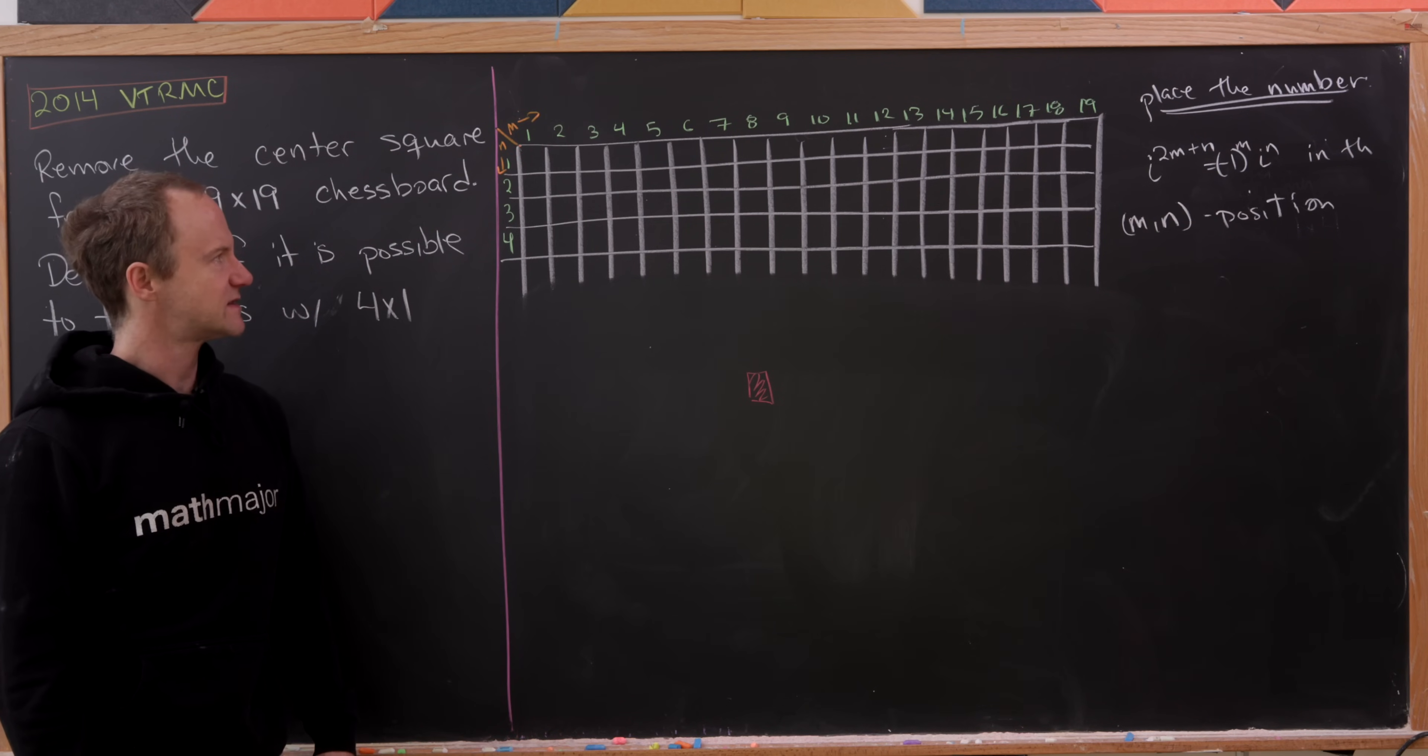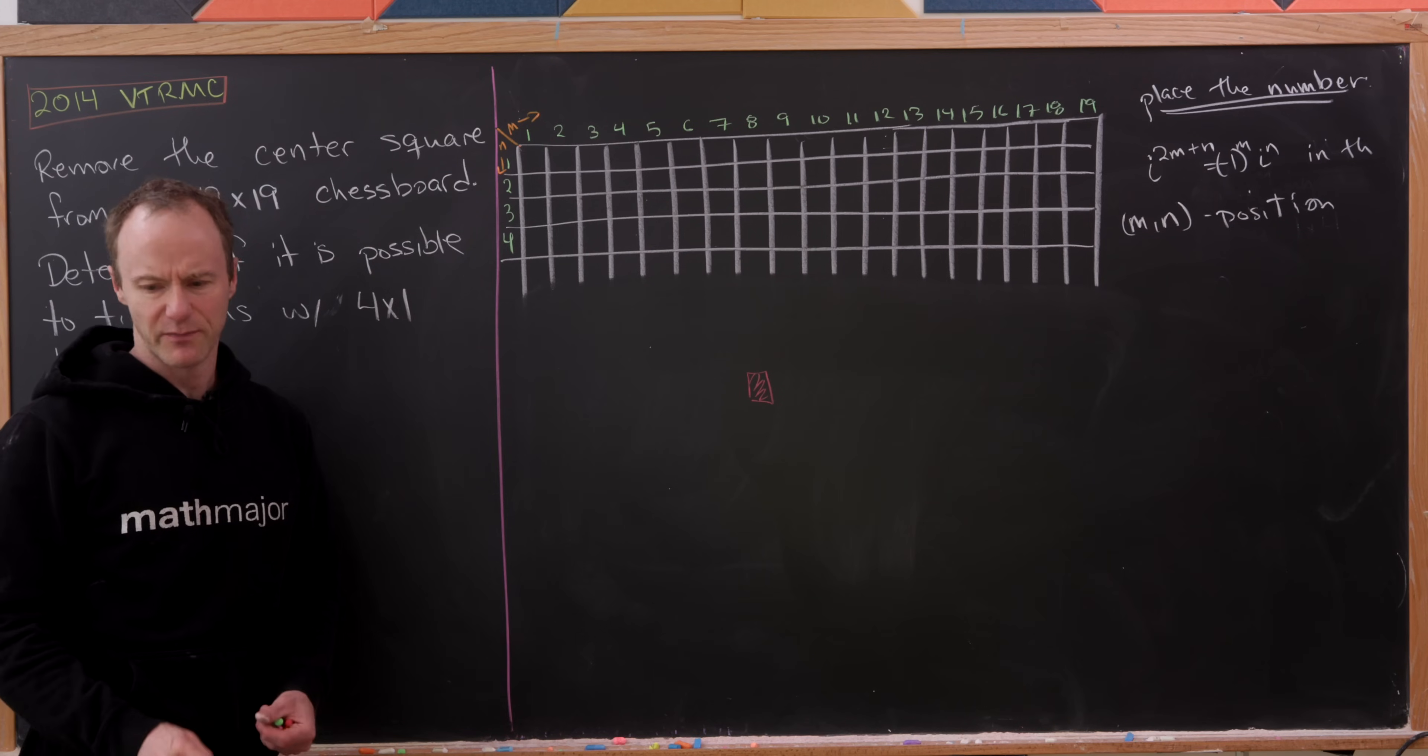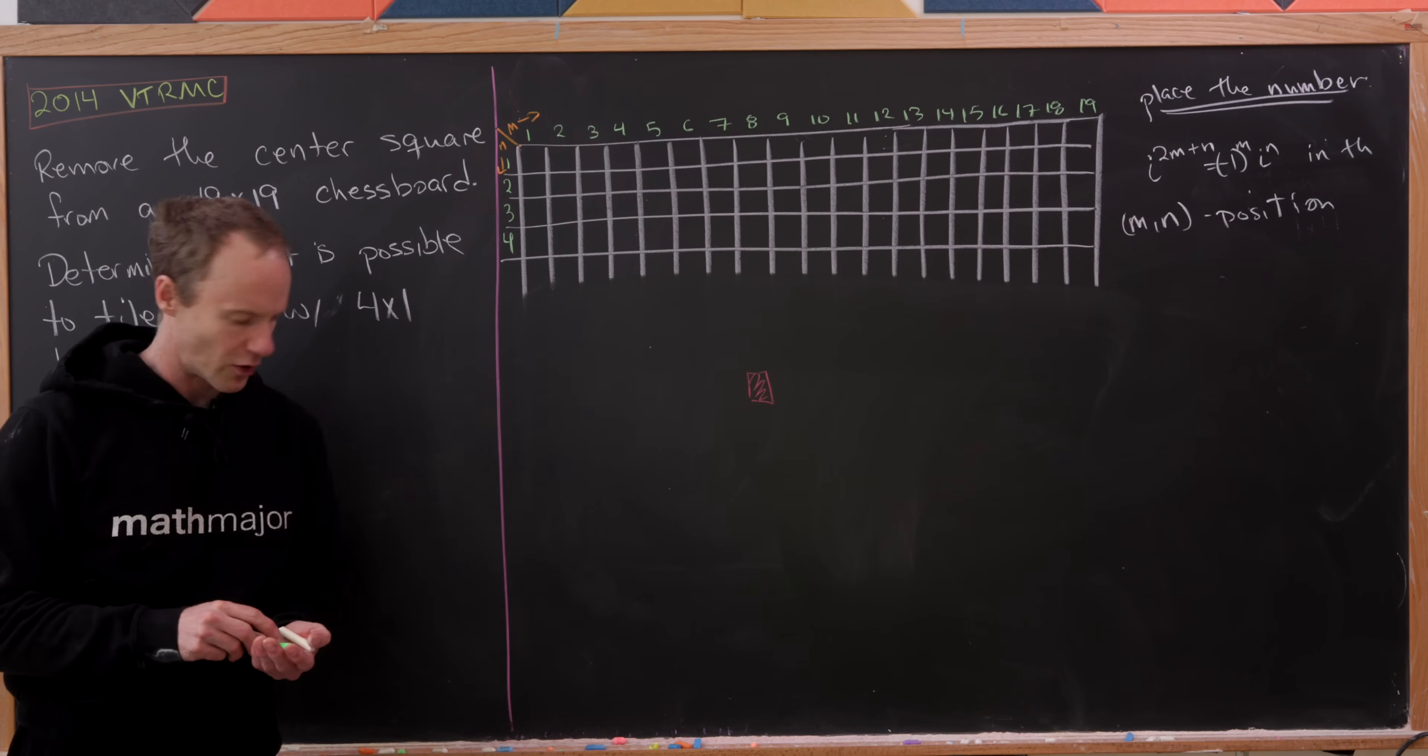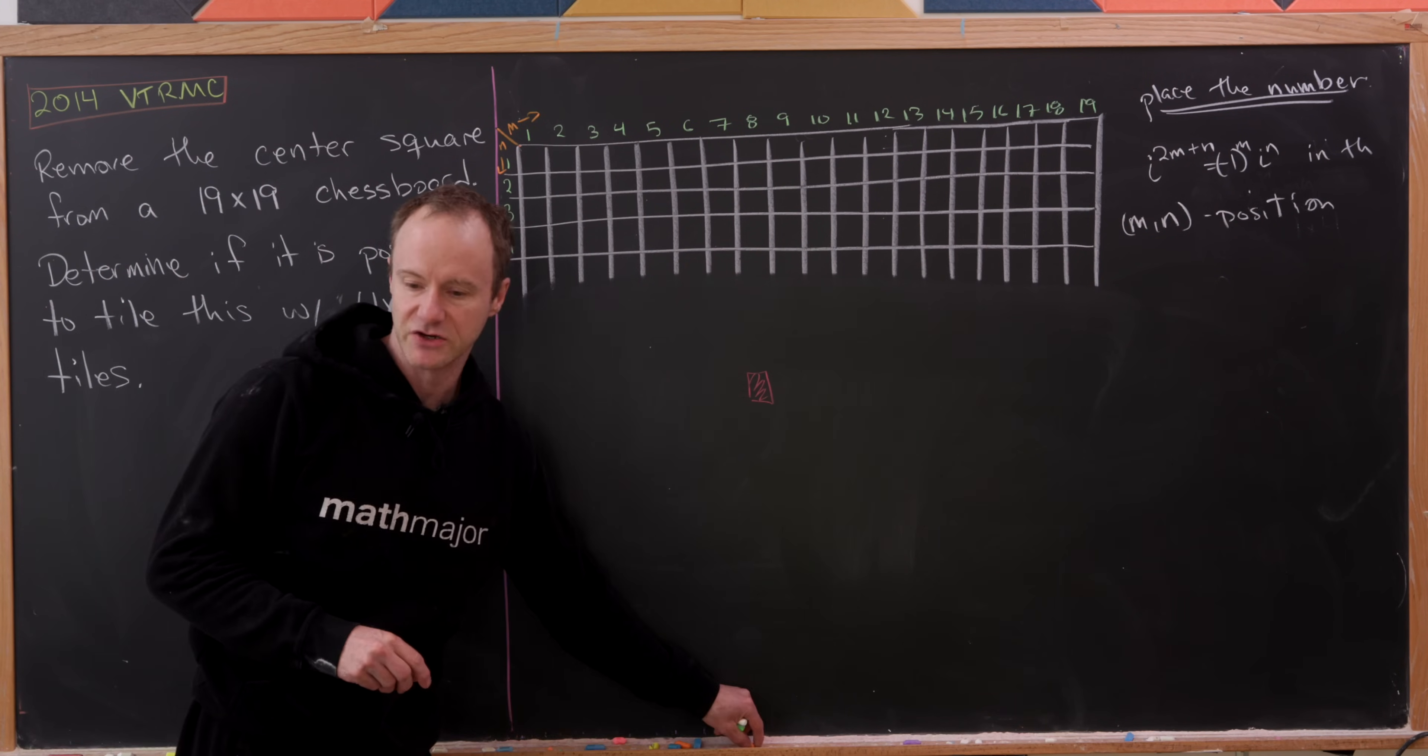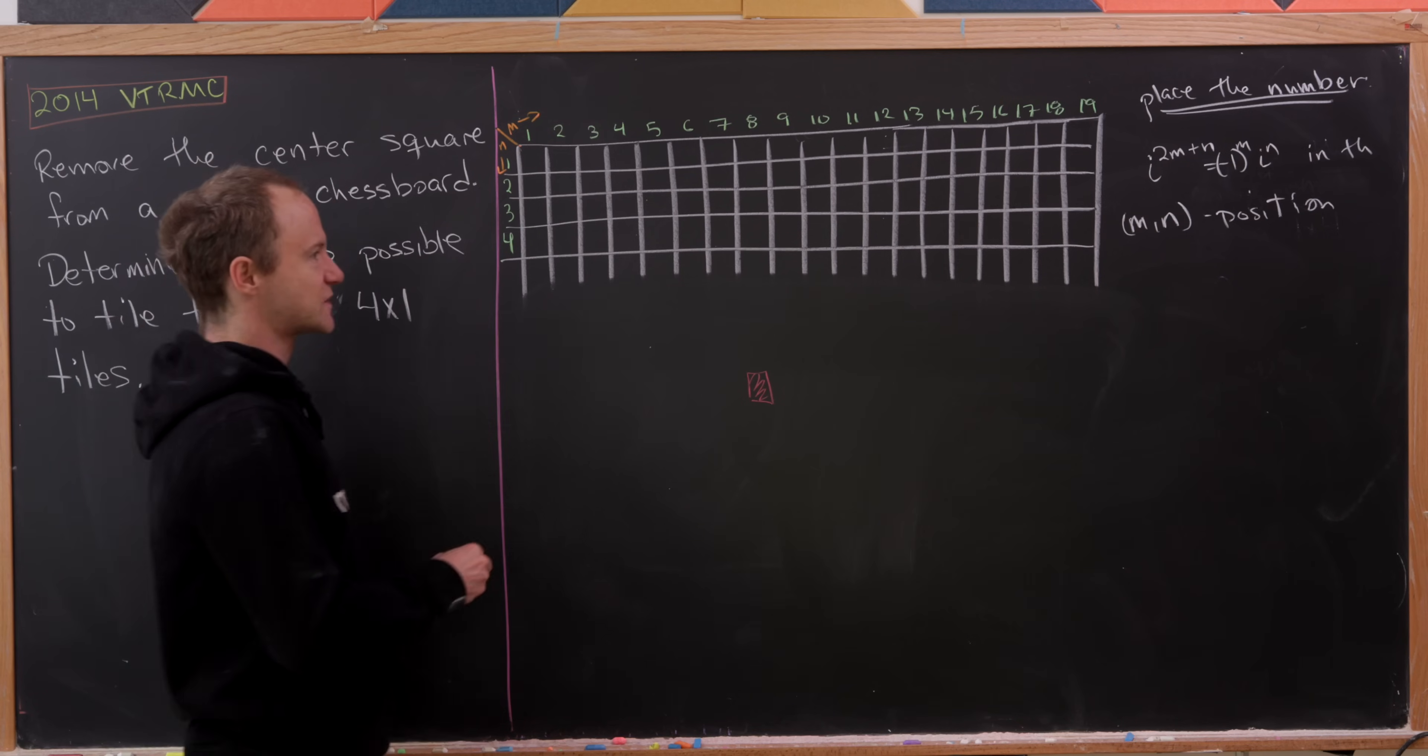So let's see what the first couple of rows would look like. Well, maybe not the whole row, but the first couple of entries. By this rule right here, we would have a minus i in this location.